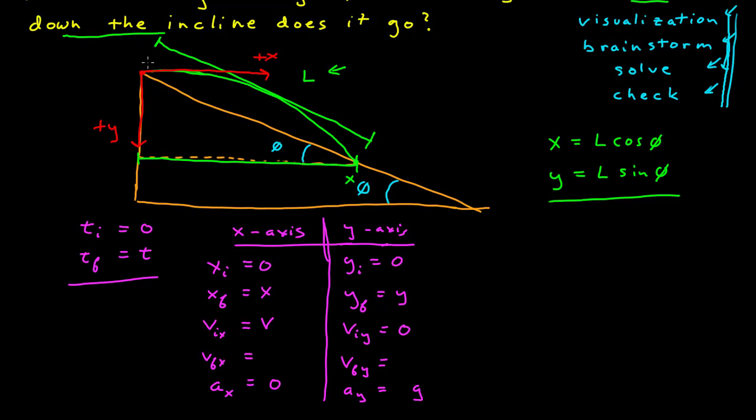But we know the acceleration in the y has a magnitude g. In this case, y is pointing down. The acceleration is pointing down towards the center of the earth. So given this coordinate system, the acceleration in the y dimension is g.